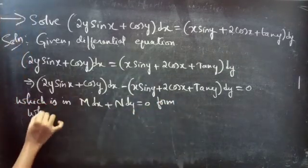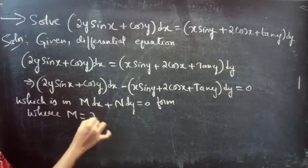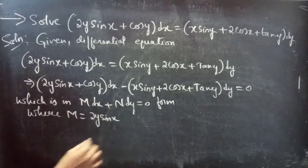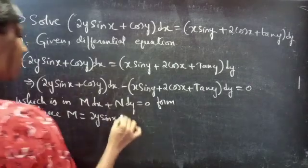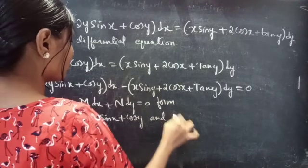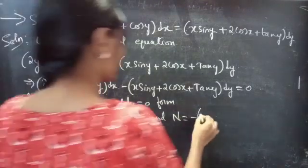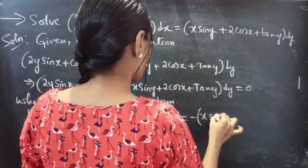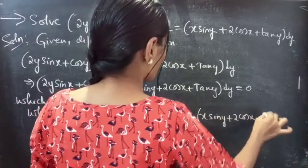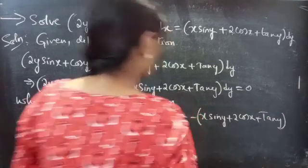This is in M dx plus N dy equals zero form, where M equals 2y sin x plus cos y, and N equals minus of (x sin y + 2 cos x + tan y).